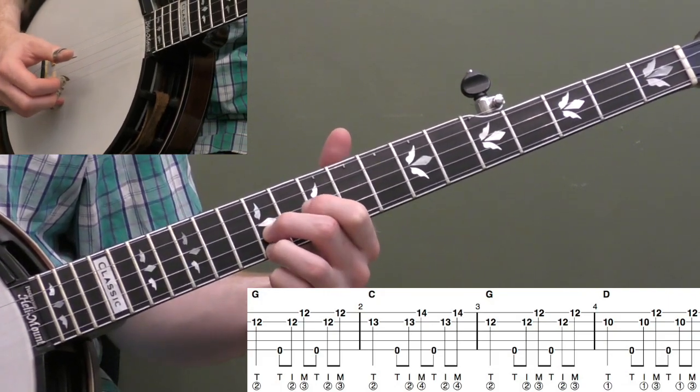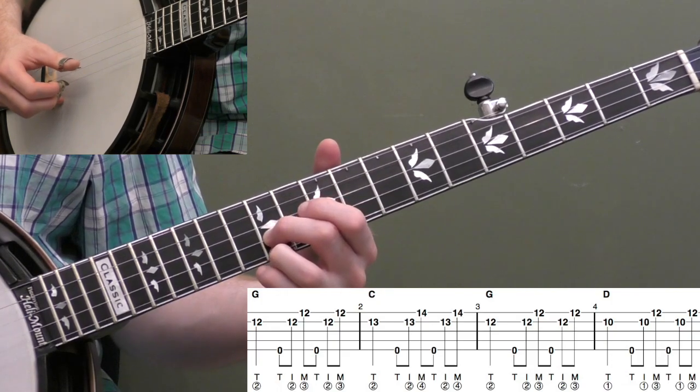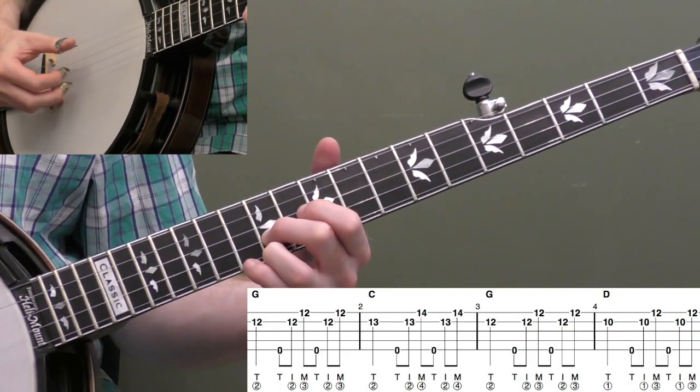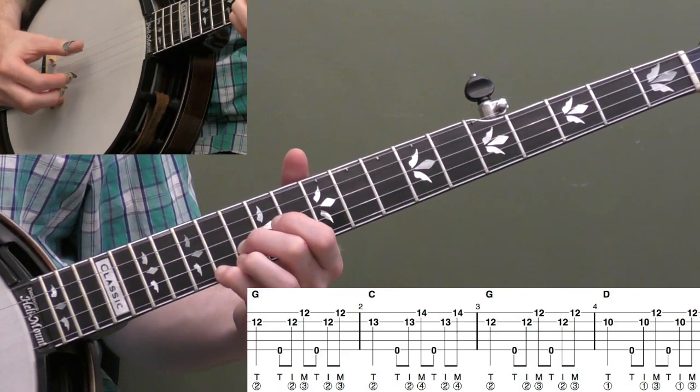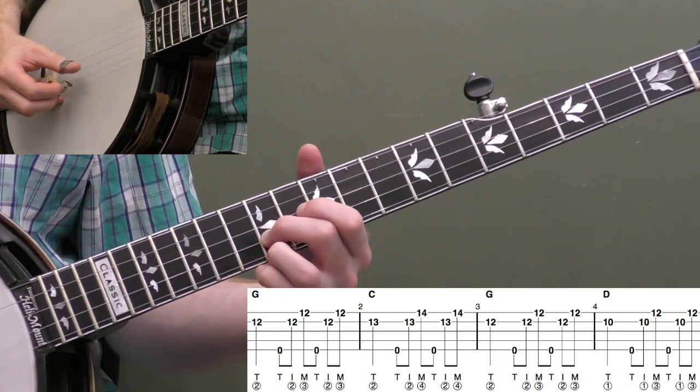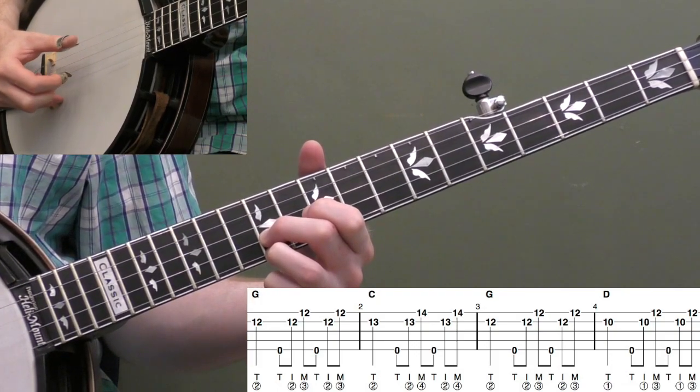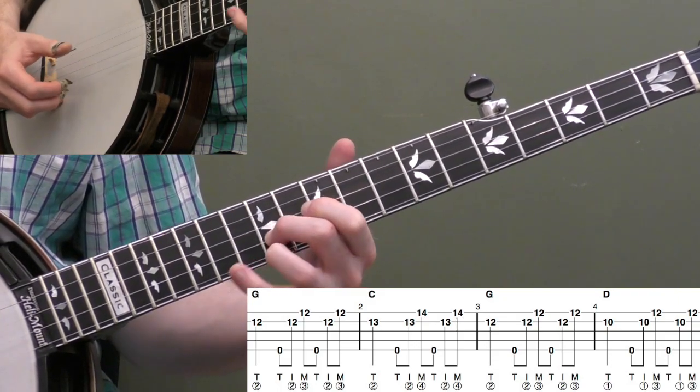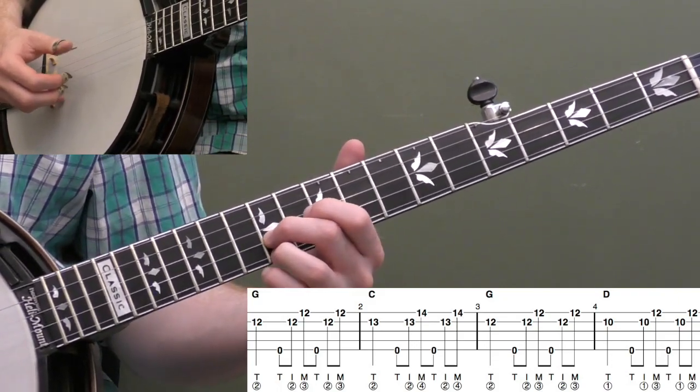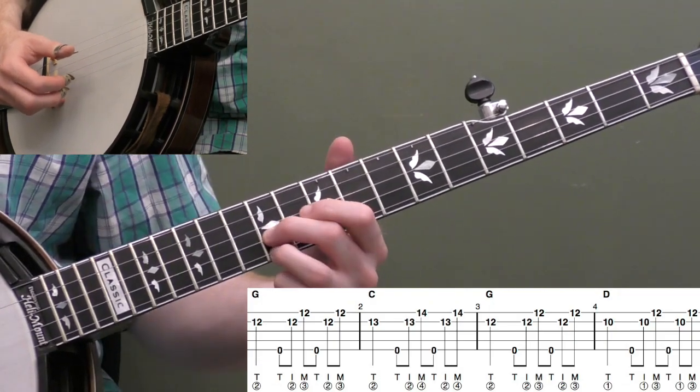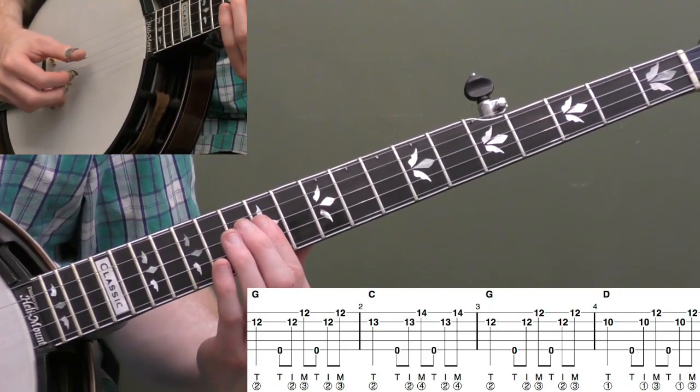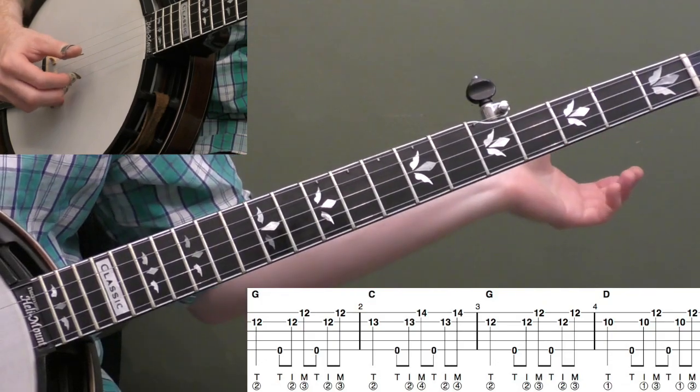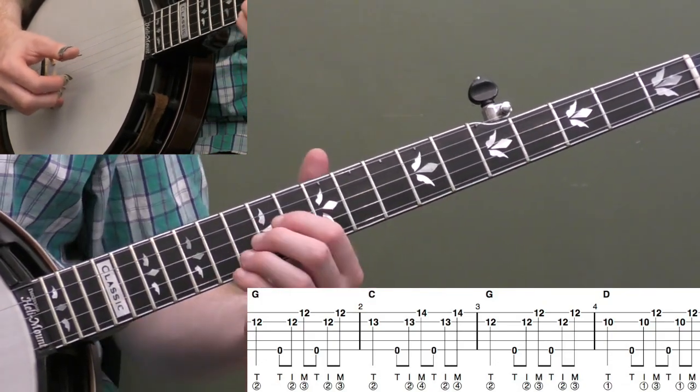Let's practice the first four measures. Think of these as positions. So we've got G, C, G, D. Once you get these positions down I'll show you some other roles you can use using these same positions. Think of these as positions. We've got our bar chord, which is our G, that's just like playing open, right?